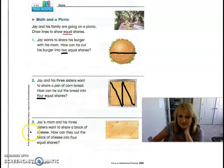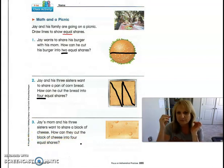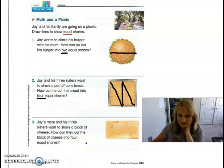Okay, let's go down to number three. Jay's mom and his three sisters want to share a block of cheese. How can they cut the block of cheese into four equal shares? Okay, so again we have his mom and his three sisters. So how many all together? Four people. All right, so go ahead and pause the video and you cut it into four pieces and I'll cut mine into four pieces.